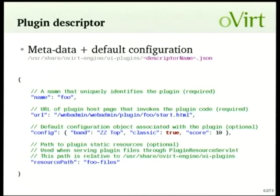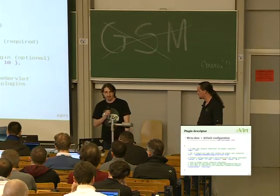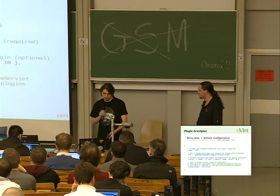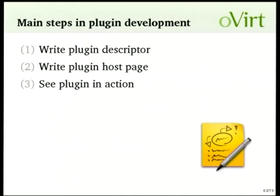Let's look at the metadata and default configuration. You put it in a JSON file located in `/usr/share/ovirt-engine/ui-plugins`. It's important to have a unique name — each UI plugin needs a unique name. The URL points to the webpage that hosts the JavaScript code, and you can optionally pass in some config options. To summarize: you write a plugin descriptor and a plugin host page, then see your plugin in action. It's quite simple.